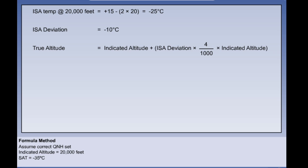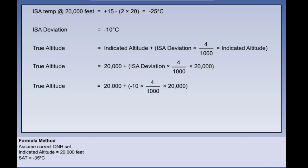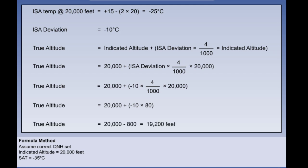We can now substitute into our formula: true altitude equals indicated altitude plus ISA deviation times 4 feet per thousand feet times the indicated altitude. Our indicated altitude is 20,000 feet and the ISA deviation is minus 10. The part in the brackets comes to minus 10 times 20 lots of 4, that's minus 10 times 80. So that's 20,000 minus 800. The true altitude is 19,200 feet.